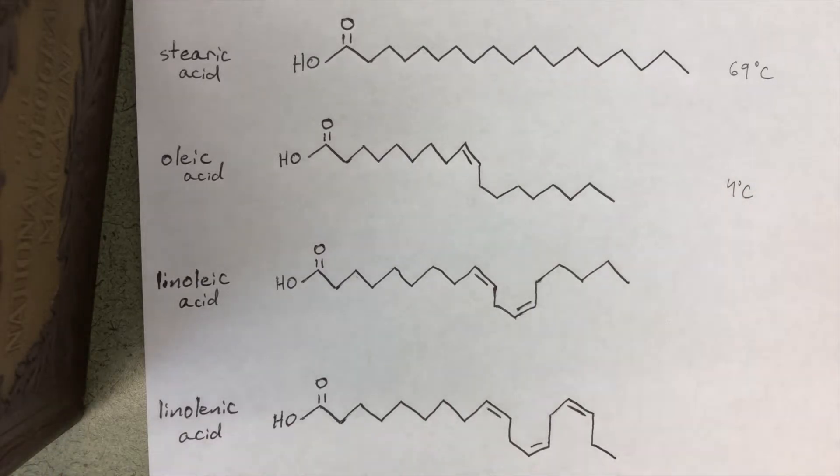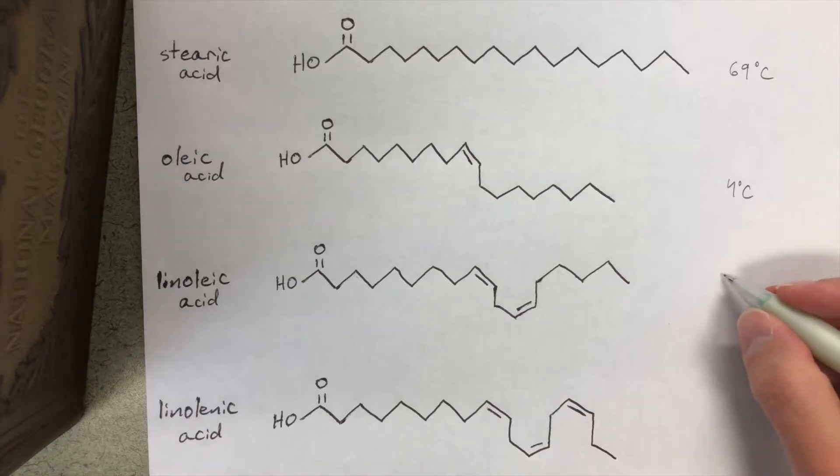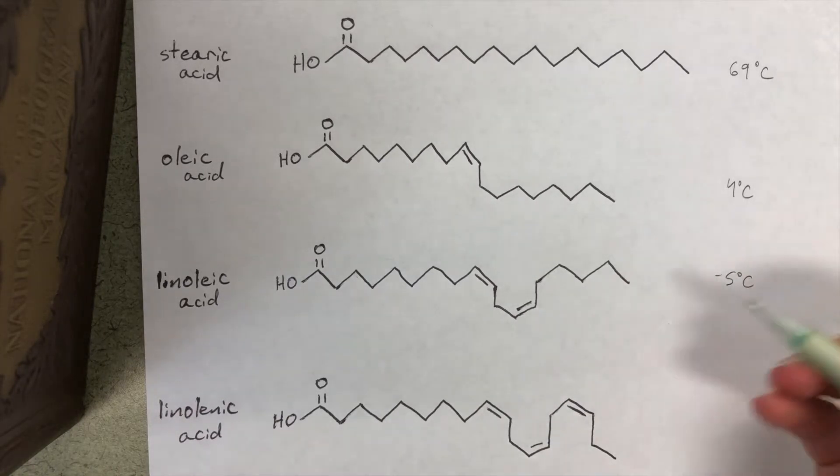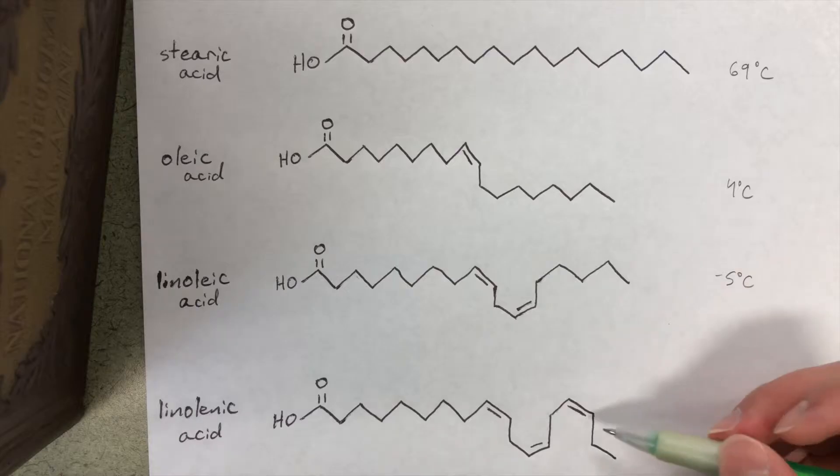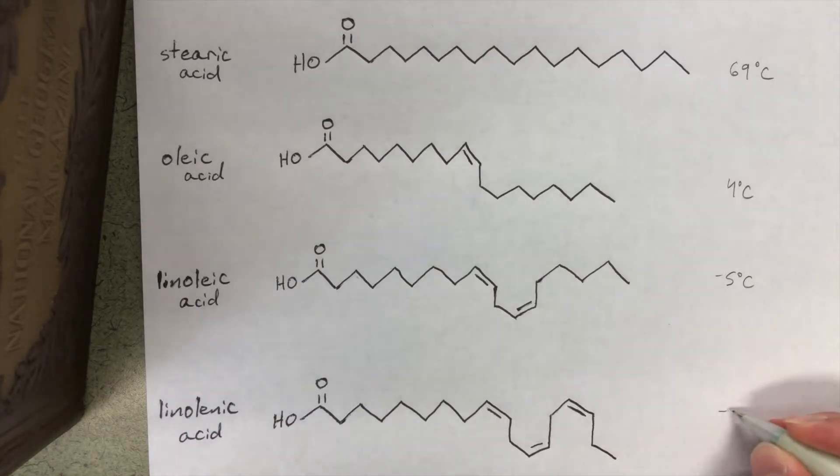If we go below that to linoleic acid, its melting point is negative 5 degrees Celsius and you can see that we have another degree of unsaturation introduced. If we introduce yet another degree of unsaturation with linolenic acid, we have the melting point go down to negative 11.